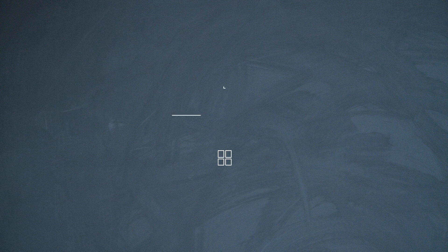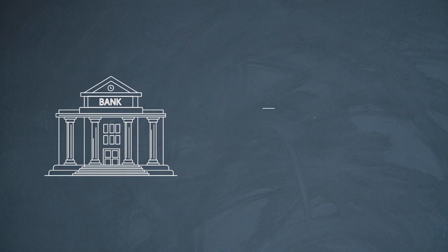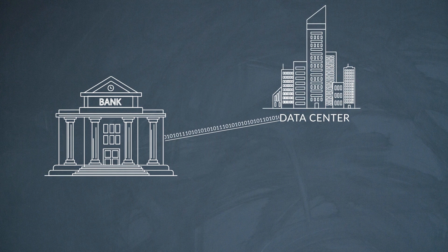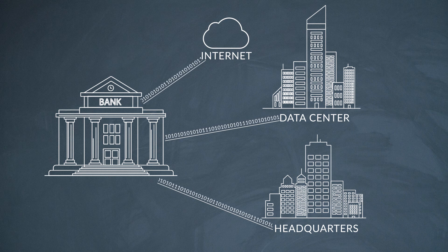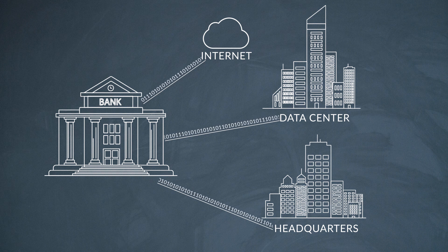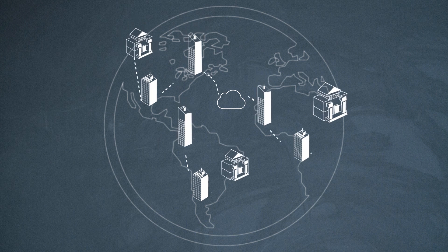Let's use an example to illustrate. Imagine a branch office of a large enterprise — say a bank or a financial institution. It needs high-speed connectivity to a data center headquarters and the internet, and that connection provides everything from access to critical business information to email and web surfing. It's the lifeline of the branch.